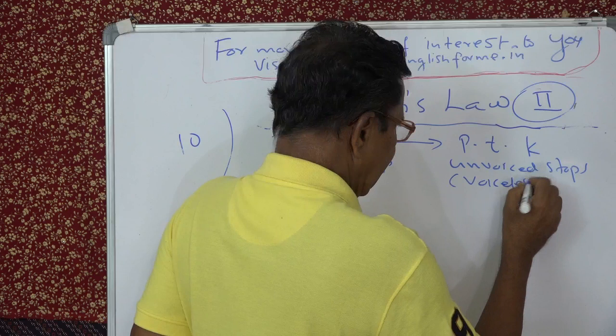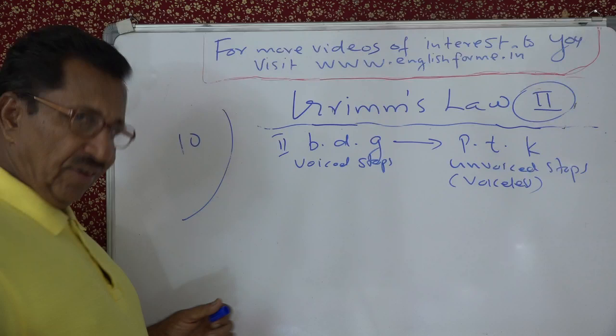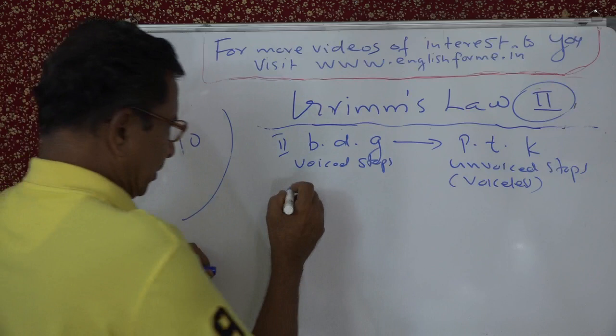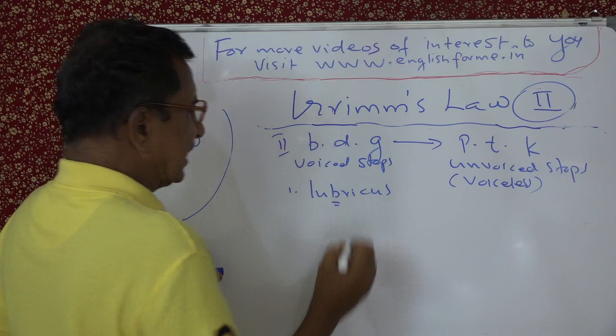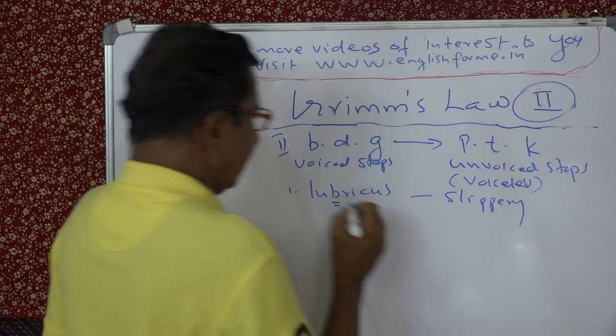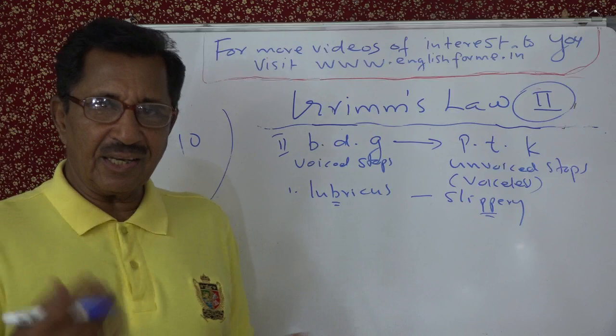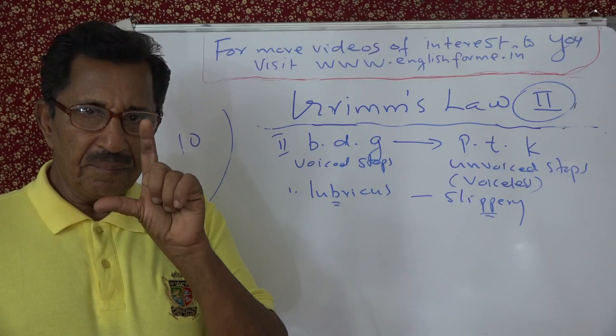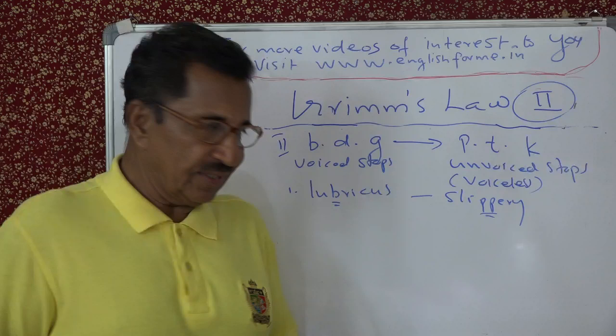The examples are taken from Latin. The first one is 'lubricus', which means slippery. In English it has become 'F' — the B has become F. When you transcribe it you use a single F sound. 'Lubricus' — oil is a lubricant; you can see this correspondence.